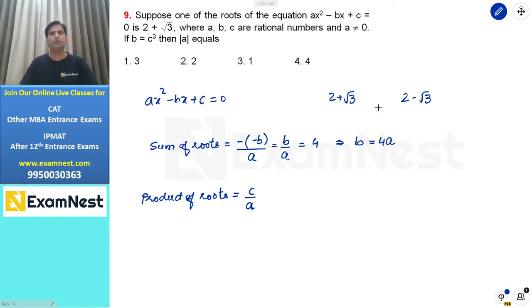For product of roots, if we multiply these two roots, we get 4 - 3, that is 1. So from this, the value of c equals a.